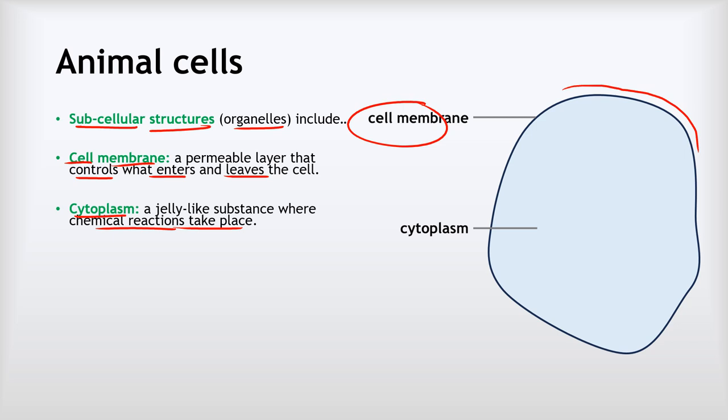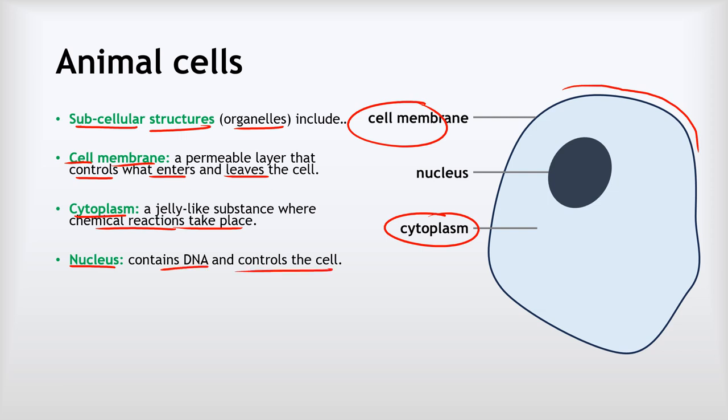Now we have to understand that cells, and in fact all living things, are really just very complicated chemical reactions. All of the things inside a cell are chemicals, and all of the things that happen inside a cell are chemical reactions, and those chemical reactions happen in what we call the cytoplasm. Our next subcellular structure or organelle is the nucleus. Now the nucleus contains DNA and it controls the cell's activities.